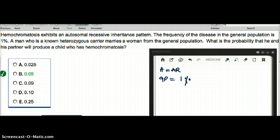Now a man who is a known heterozygous carrier. So we have a man here, he's a heterozygous carrier. Let's say big H is a normal allele and small h is the hemochromatosis allele, autosomal recessive gene pattern. He marries a woman from the general population. What is the probability that he and his partner will produce an offspring with hemochromatosis?